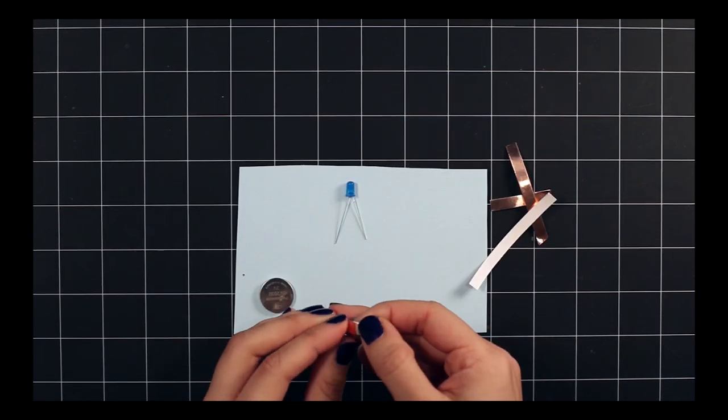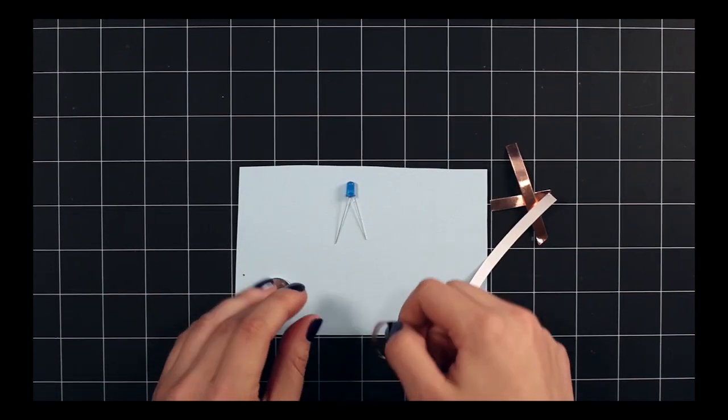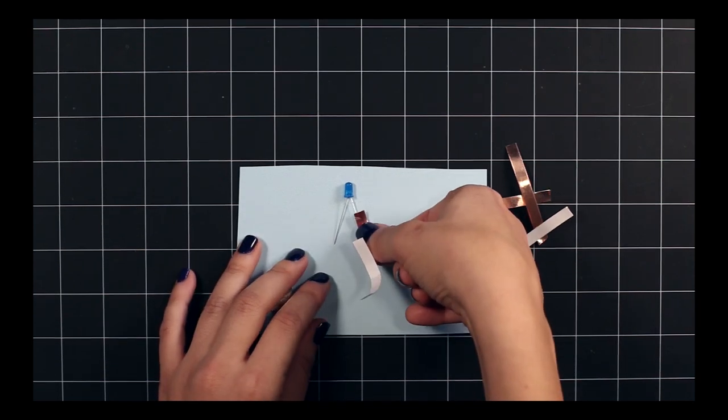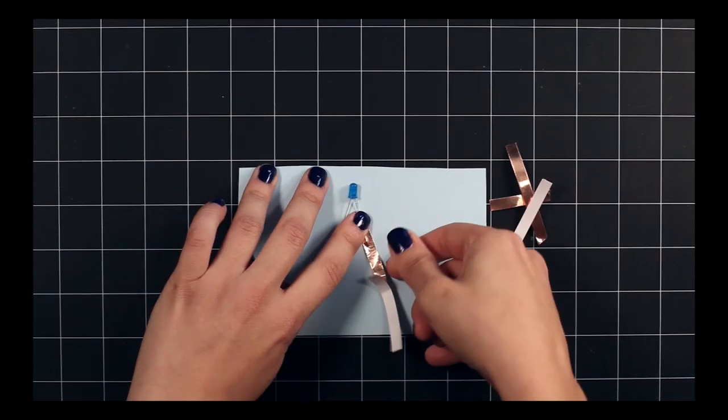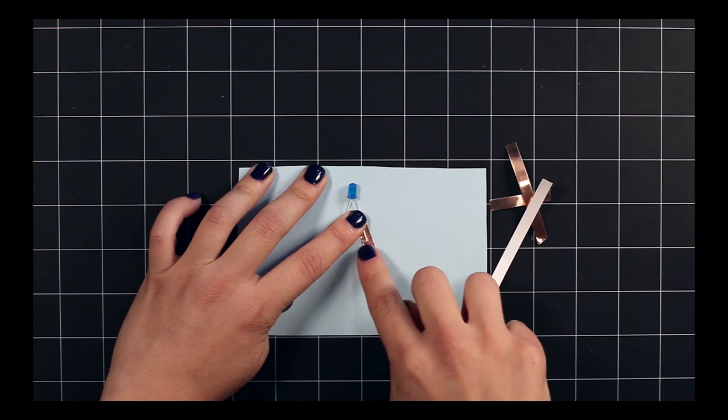Put your LED down on a piece of paper and peel your first piece of copper tape. Make sure it doesn't wrinkle. And press that firmly along the leg of the LED and then firmly against the paper.